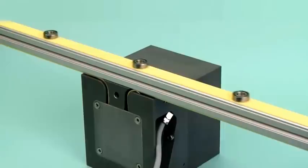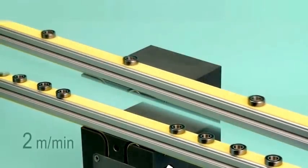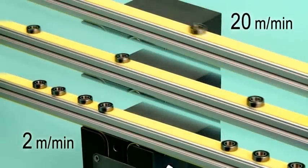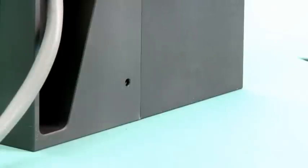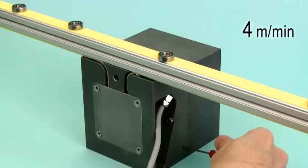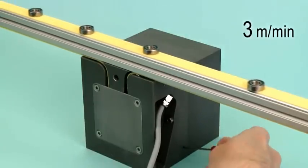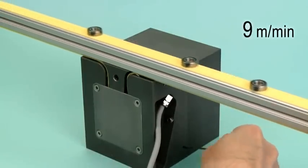The belt speed has a broad adjustment range of 2 to 20 metres per minute. Adjustment can be done from the outside with ease using an adjustment screw or an analogue signal from 0 to 10 volts of control voltage.